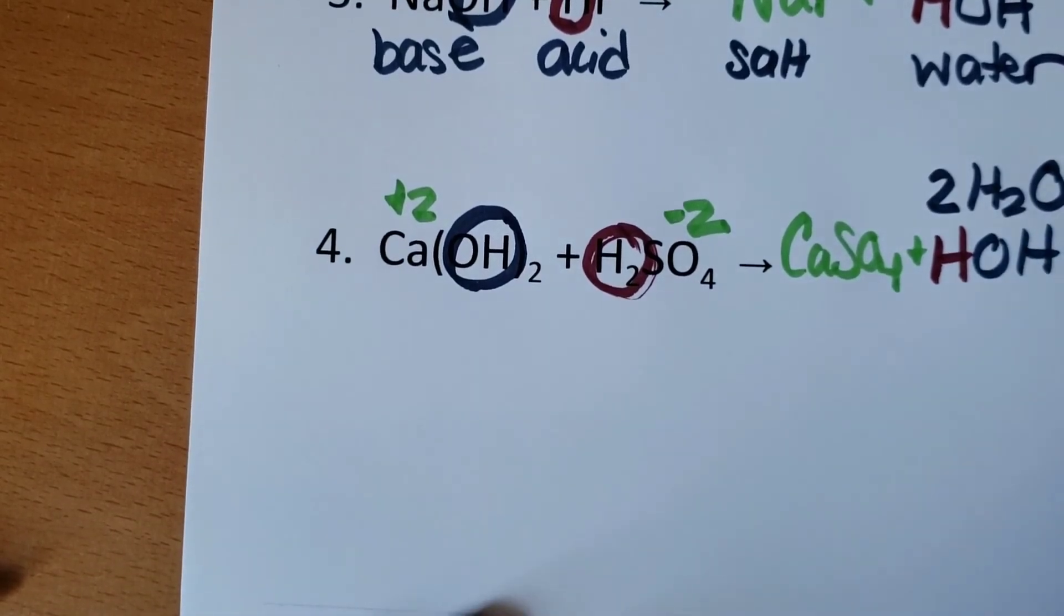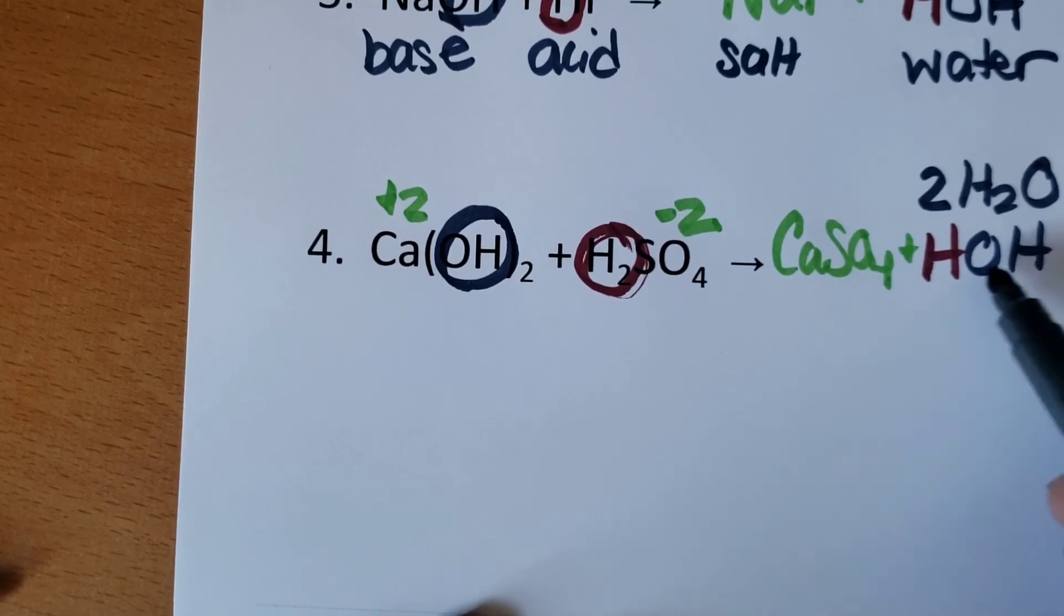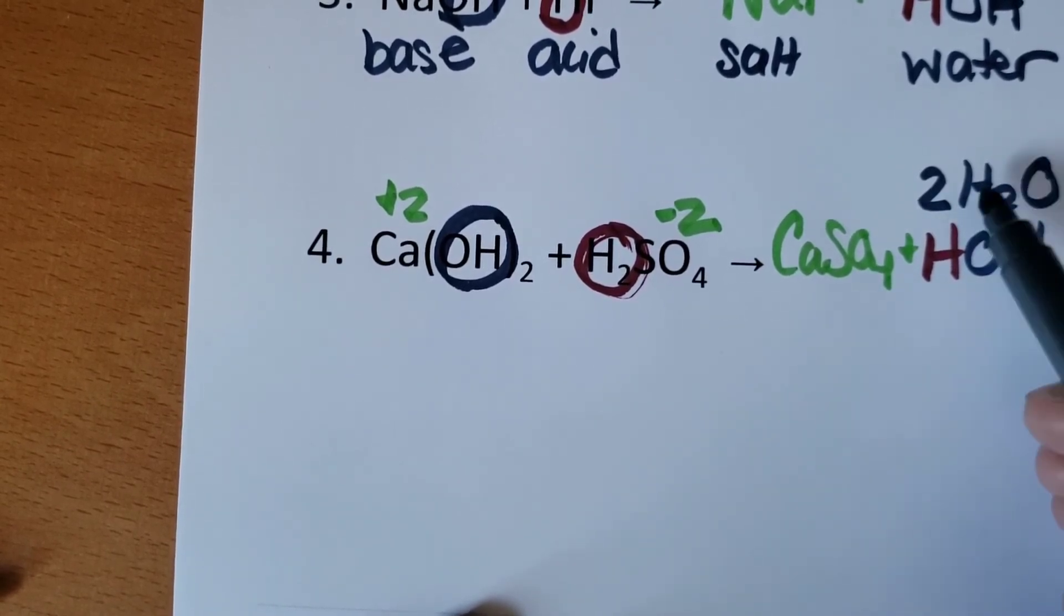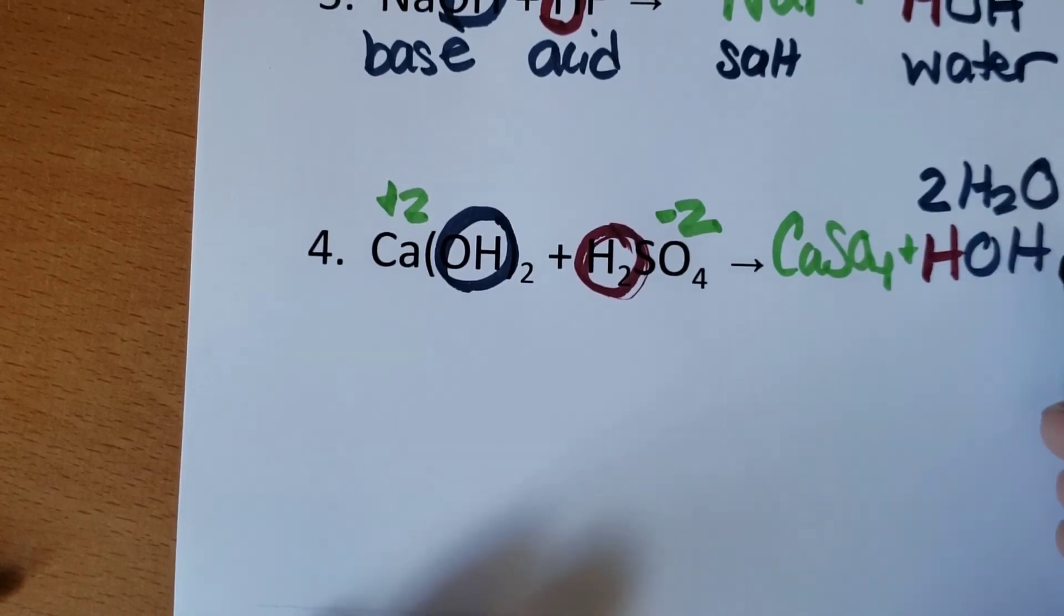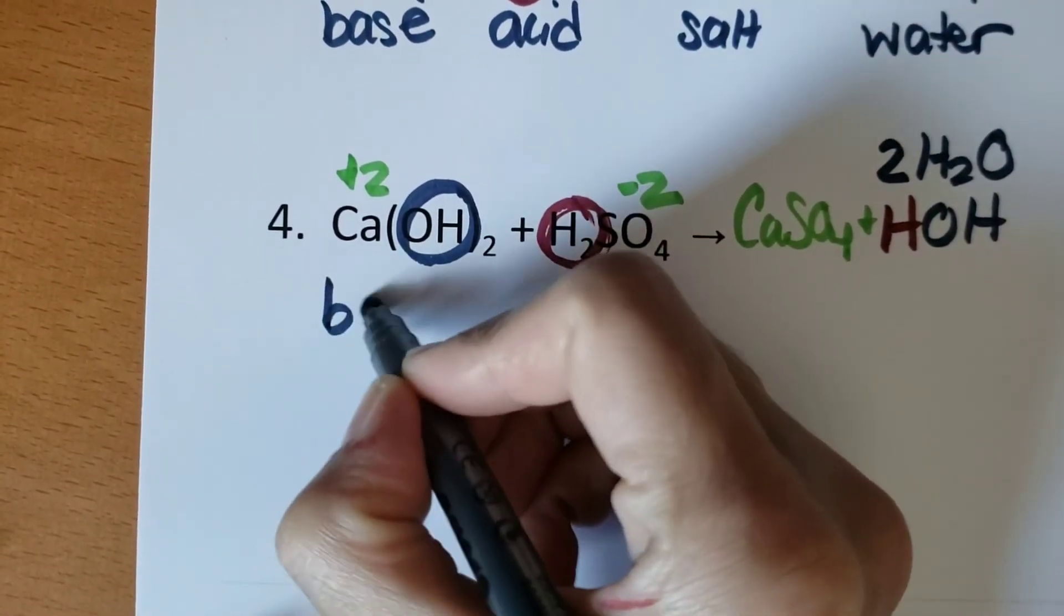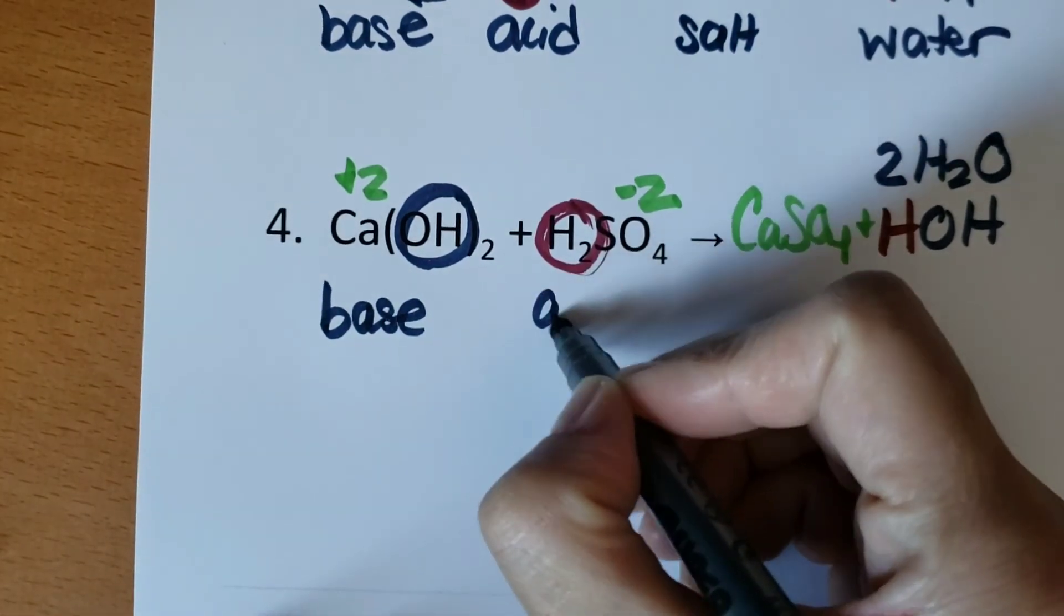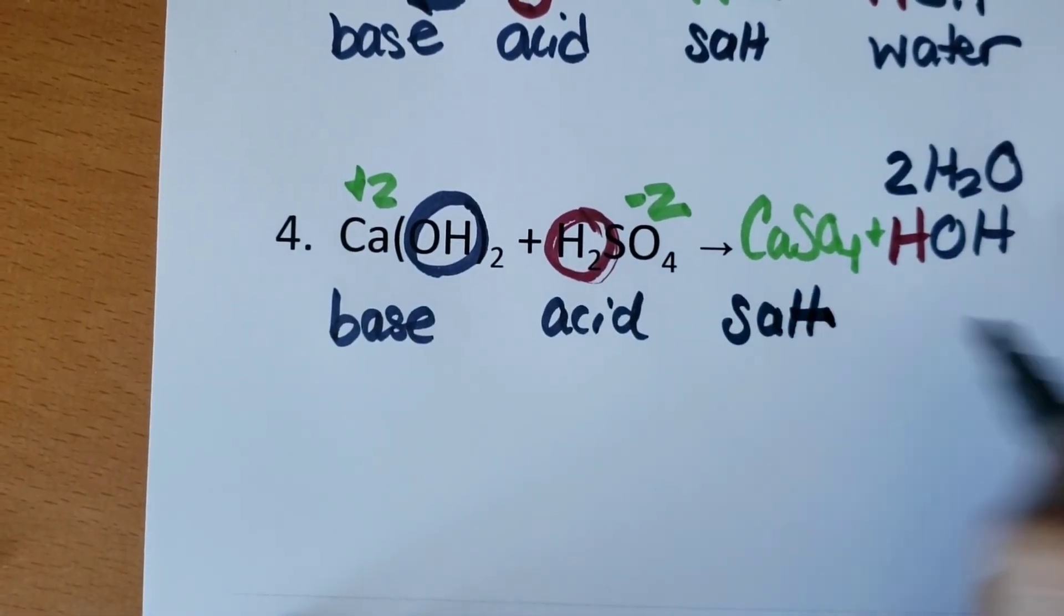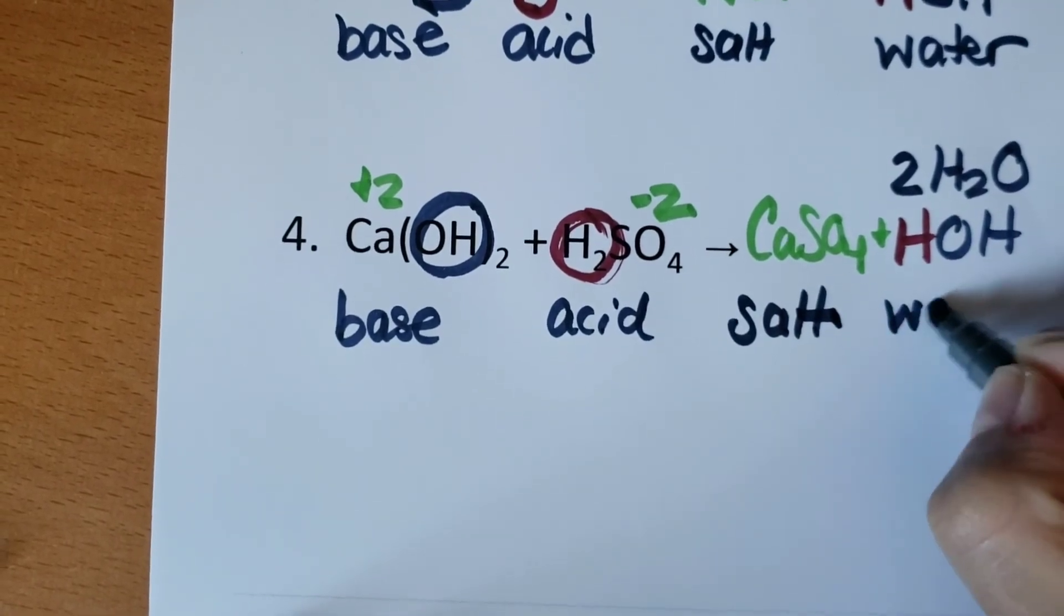And I have one sulfate and one sulfate. So again, I usually write water as HOH. It is totally acceptable on the regions. But if you want to sum it up to water, that is fine as well. So lastly, we have a base and an acid make salt, which is just a fancy word for ionic compound, and water.